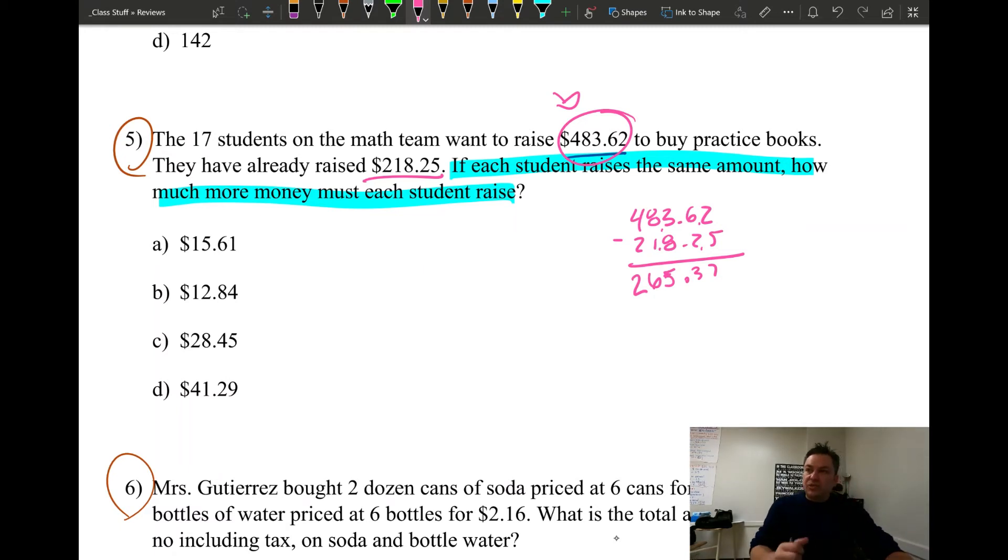That's how much money they still need to raise. Now it says right here, if each student raises the same amount, that's a keyword: 'each' tells you that you need to divide, okay? So we gotta raise $265.37, and we're gonna expect every student to raise the same amount. In this case, how many students we have? 17. So all we gotta do is divide. When we divide that by 17, and I'm not gonna do the division because you already know how to do this and it's just gonna take more time, you get $15.61. So every student needs to raise $15.61, which is A.